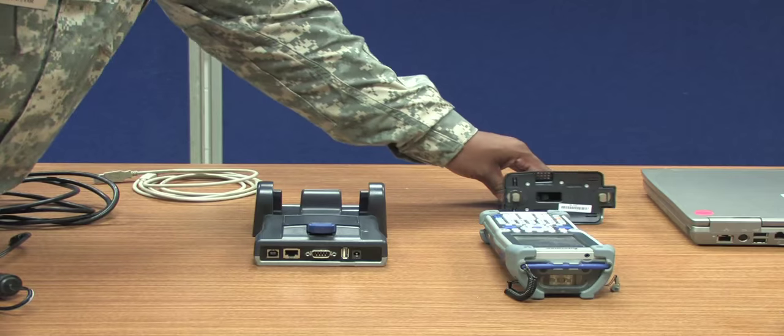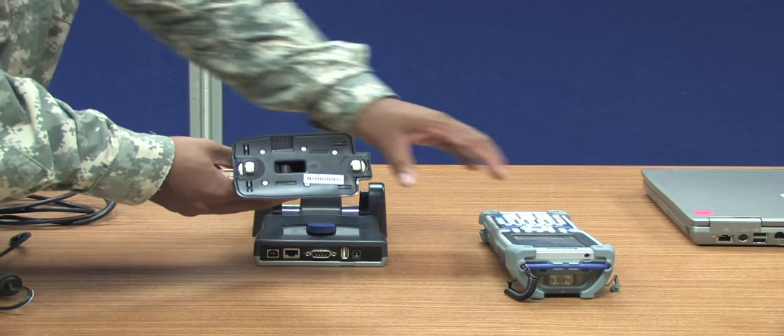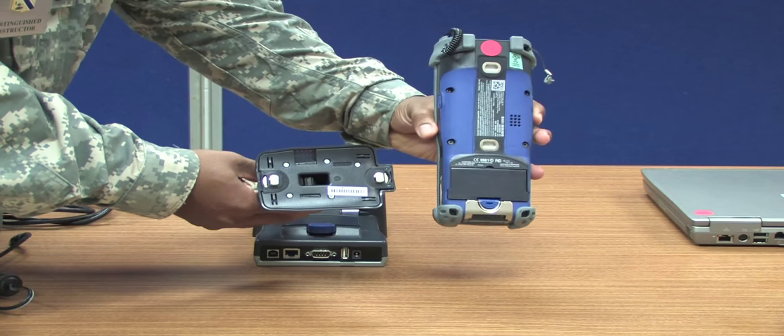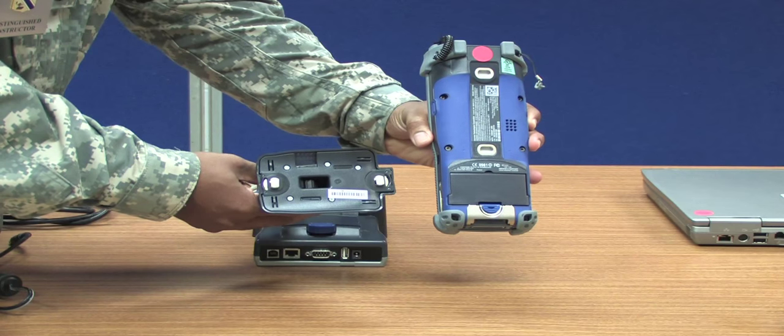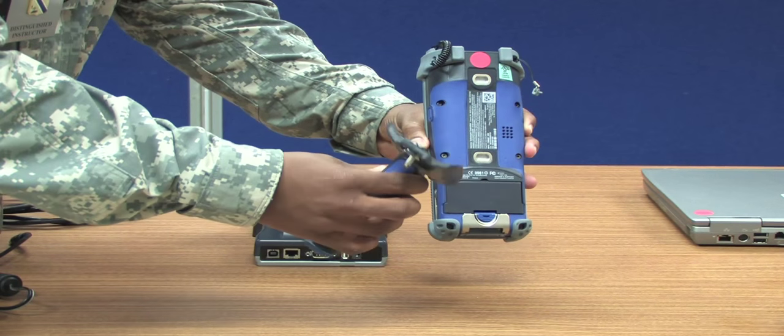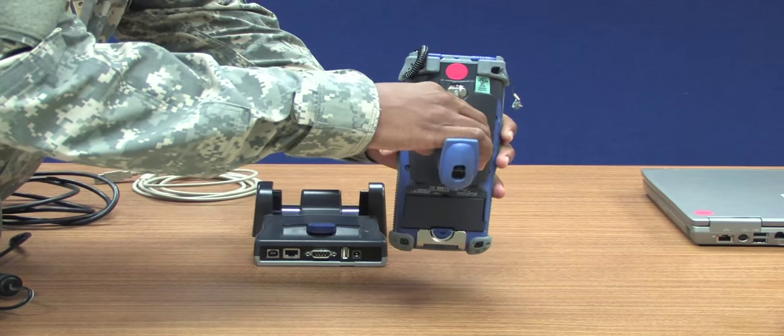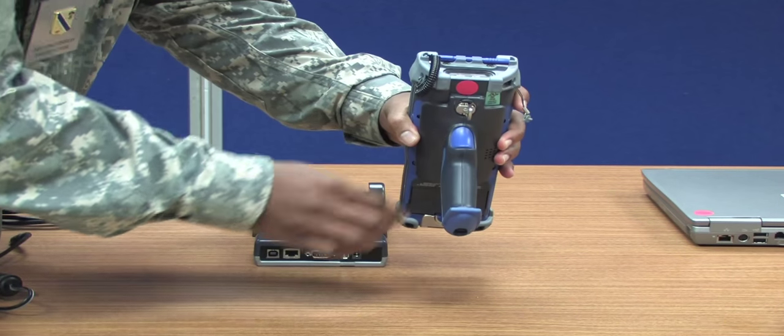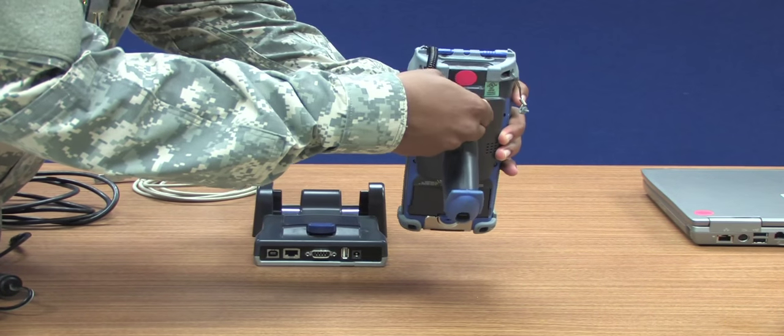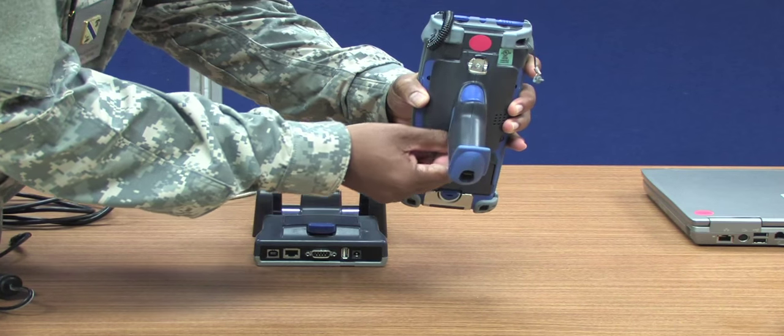Once the batteries are installed, attach the Pistol Grip onto the Handheld Terminal. The Pistol Grip is an additional authorized item that comes with the Intermec CK61 Automatic Identification Technology Handheld Terminal. You may or may not have the Pistol Grip.